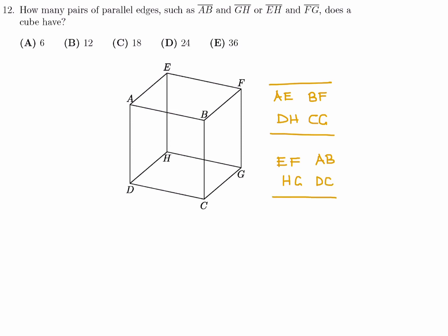And then the last group of parallel sides, EH, AD, FG, and BC. Now they're saying, how many pairs? All right, well, you can make pairs.